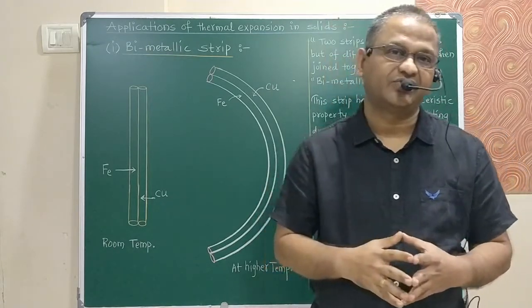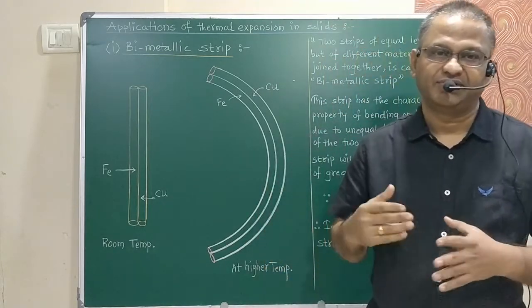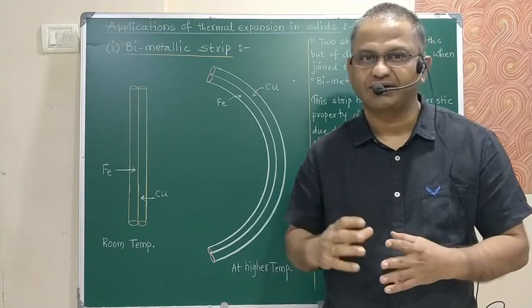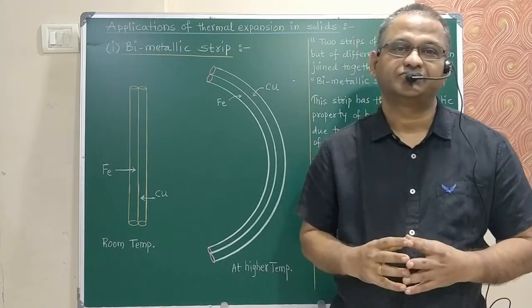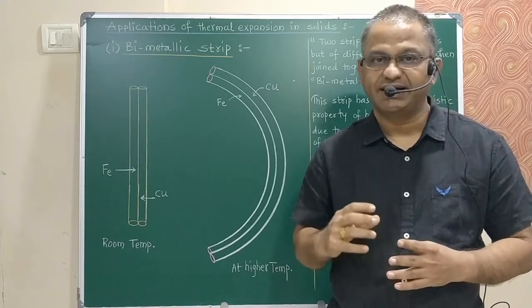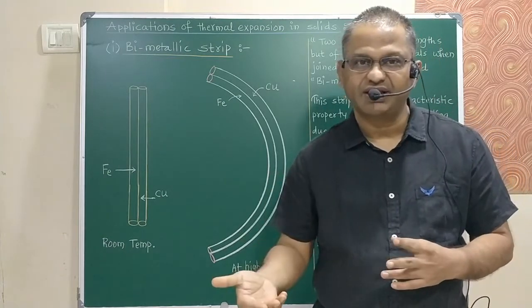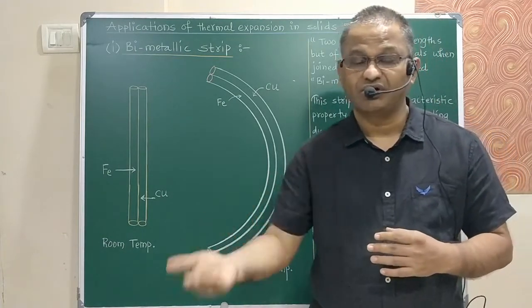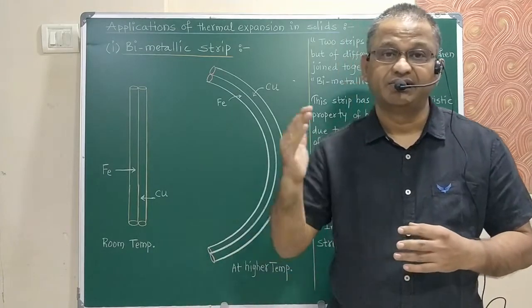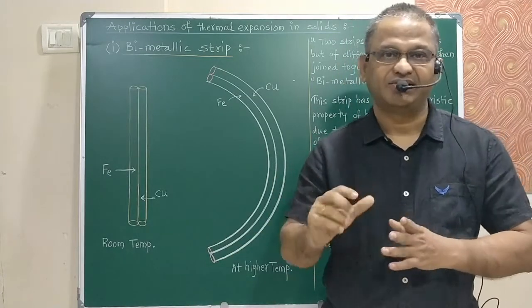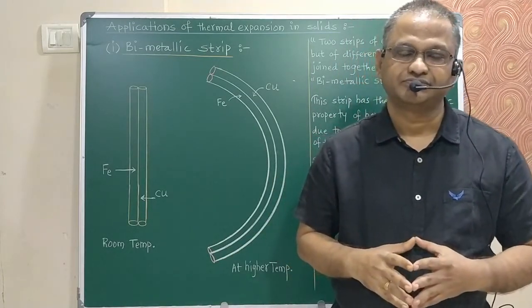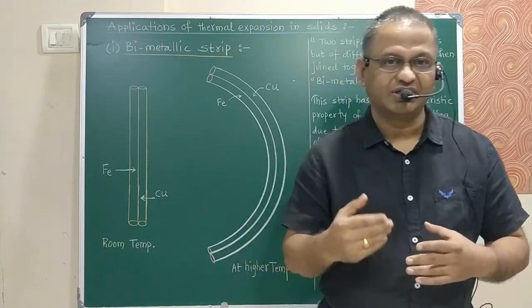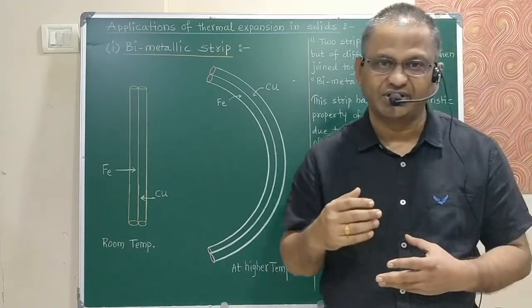Such a bimetallic strip is used in different applications. One such application is a thermostat, where it is used to establish or break an electrical contact — that is, to switch a circuit on or off. The working of the bimetallic strip is based on thermal expansion of solids.